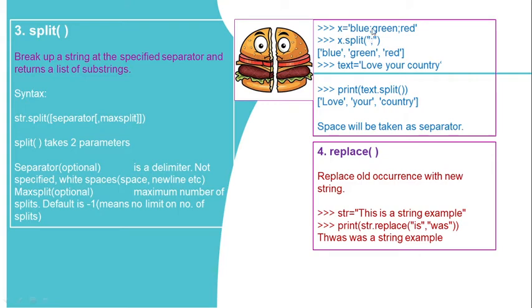For example, x equal to 'blue:green:red'. Calling x.split(':') with colon as separator returns the list ['blue', 'green', 'red'] — the single string is split into separate sub-strings. Another example: text equal to 'love your country'. Calling text.split() without specifying a separator will use white space by default, returning ['love', 'your', 'country'].